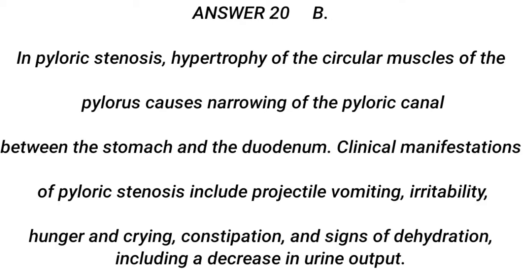Answer 20: B. In pyloric stenosis, hypertrophy of the circular muscles of the pylorus causes narrowing of the pyloric canal between the stomach and the duodenum. Clinical manifestations of pyloric stenosis include projectile vomiting, irritability, hunger and crying, constipation, and signs of dehydration including a decrease in urine output.